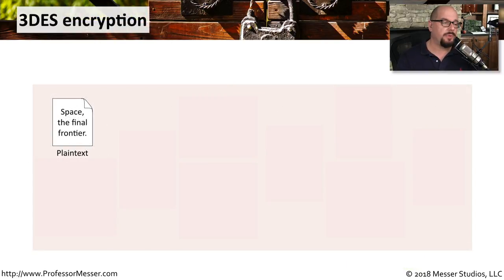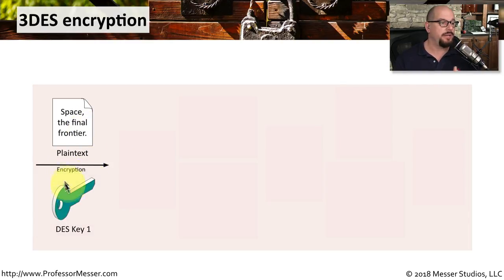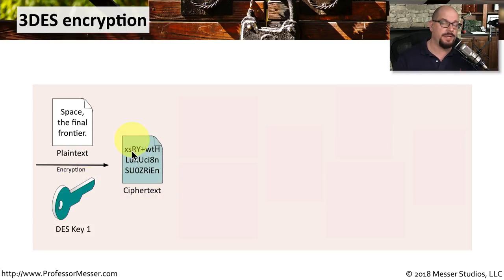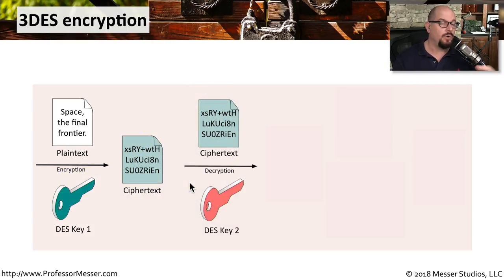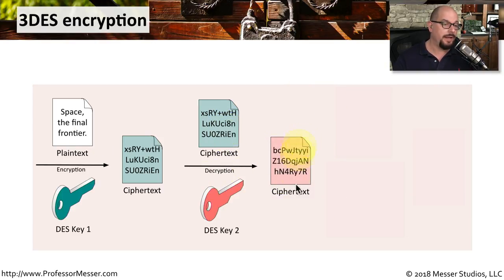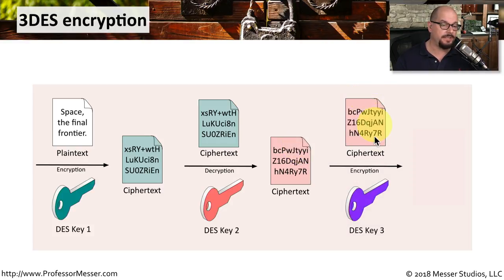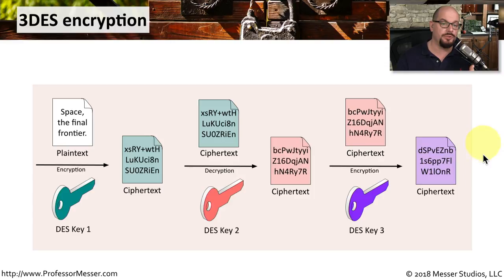Visually, this is how Triple DES worked. We start with some plain text and perform a normal DES encryption using the first key, DES key 1, to create the ciphertext. We then take that ciphertext and perform a DES decryption using a completely different key. Since this is a different key, it does not recreate the original plain text — it creates additional ciphertext. For the third pass, we use that ciphertext along with the third key and perform a DES encryption to produce the final ciphertext used in Triple DES.